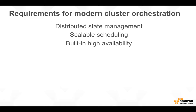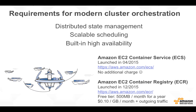And obviously the third requirement is built-in high availability. Clustering means multiple servers, and the more servers you have, the more likely it is that one is going to fail at the worst possible time. High availability should not be something the user has to build — it should be provided by the cluster management system. And so in April 2015, AWS launched ECS, EC2 Container Service.